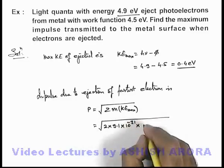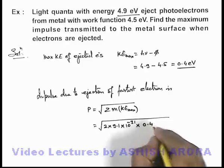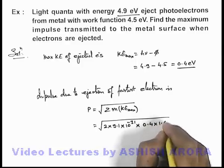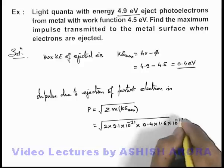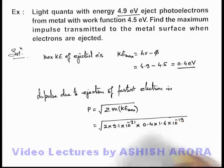Multiplied by the kinetic energy of fastest electron, which is 0.4 electron volts or 1.6 times 10 to the power minus 19 joules.